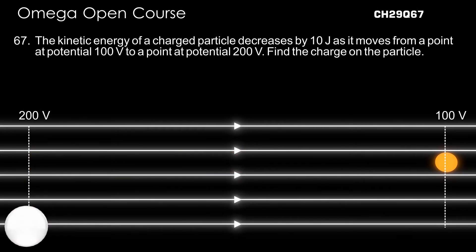The kinetic energy of a charged particle decreases by 10 joules as it moves from a point at potential 100 V to a point at potential 200 V. Find the charge on the particle.